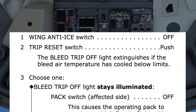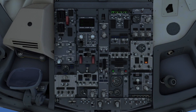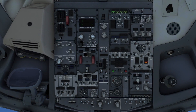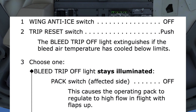The first step is to turn off the wing anti-ice switch, if on. Next, we push the trip reset switch. The note below states that the bleed air trip-off light extinguishes if the bleed air temperature has cooled below limits, which is 254 degrees Celsius or 490 degrees Fahrenheit.